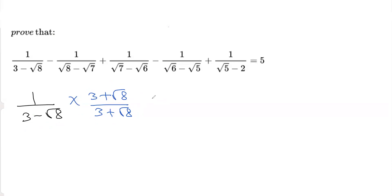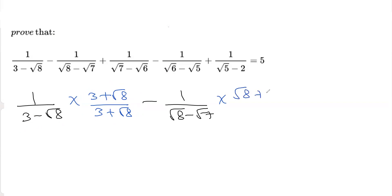Next there is a minus sign. This term is 1 over root 8 minus root 7. We rationalize by multiplying with root 8 plus root 7.